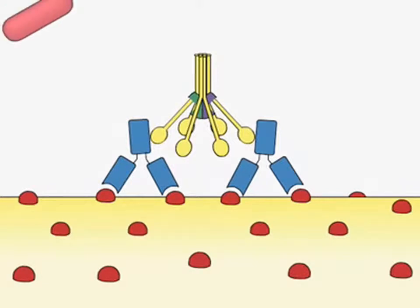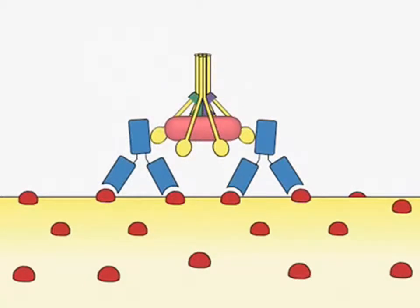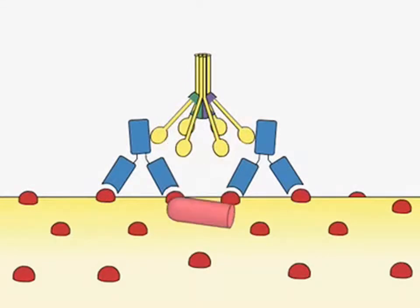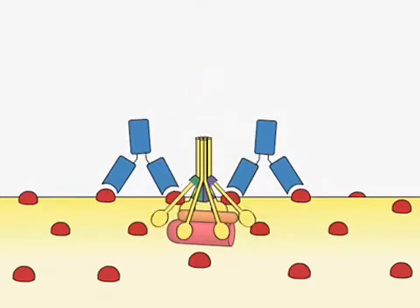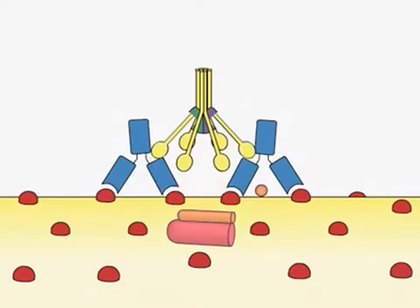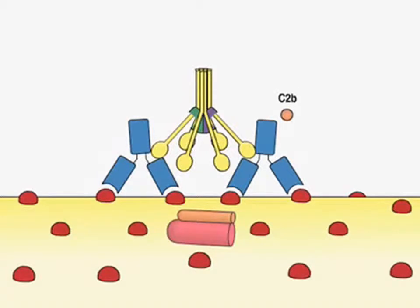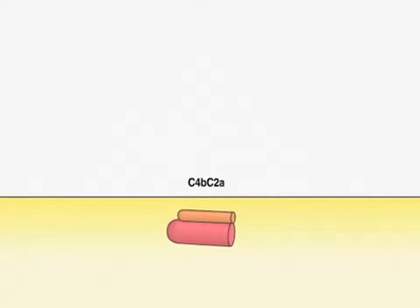Binding of the C1 complex to antibodies results in the activation by cross-proteolysis of the C1R and C1S proteases. Active C1S cleaves and activates the complement protein C4, releasing a small peptide fragment C4A, which acts as an anaphylatoxin. The remaining large fragment, C4B, which contains a labile thioester bond, covalently attaches to the surface of the bacterium through formation of ester or amide linkages. The C2 proenzyme binds to C4B and is then cleaved by the activated C1S, releasing a small peptide C2B. This leads to the generation of a new protease, C4B-C2A, also known as the classical complement pathway C3 convertase.